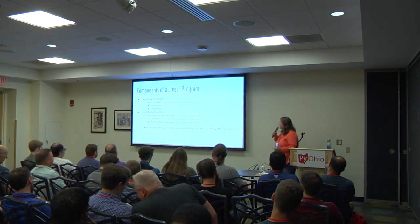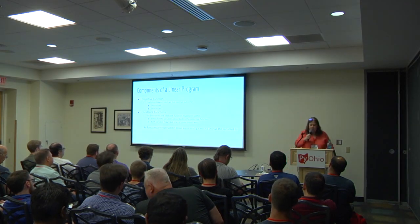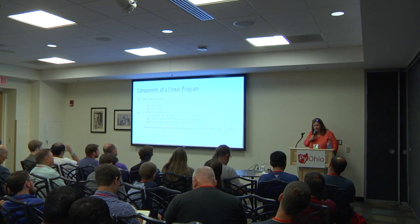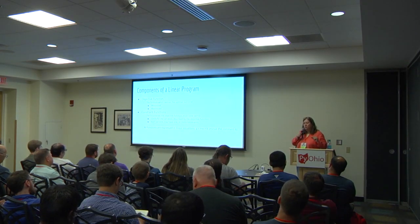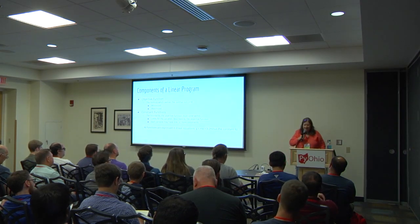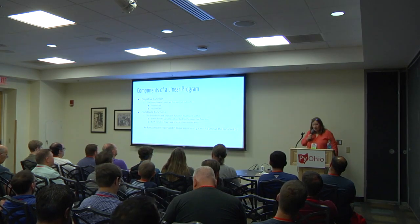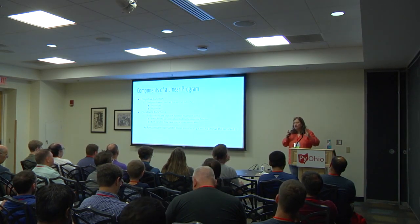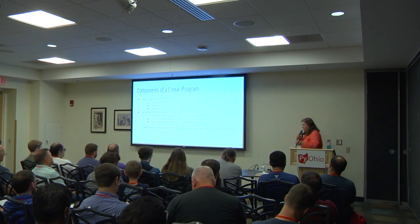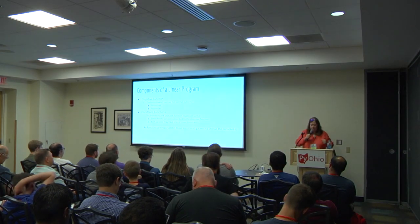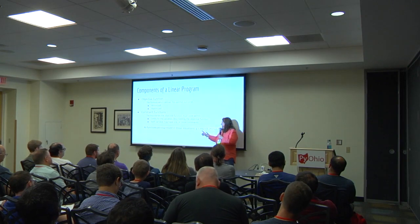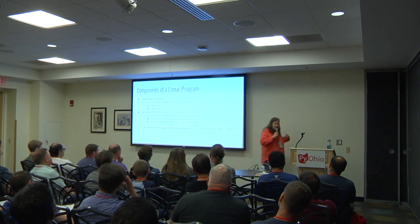The major components of a good linear program are an objective function and a series of constraint functions — it could be one, it could be many. The objective function defines your goal, your target — what you're either trying to minimize or maximize. The constraint functions set up the boundaries within which the objective function has to operate. If you remember y = mx + b from high school algebra, that's the base concept — but we get rid of the constant b. You can have multiple x variables: x sub 1, x sub 2, x sub 3. Importantly, these are not polynomials.